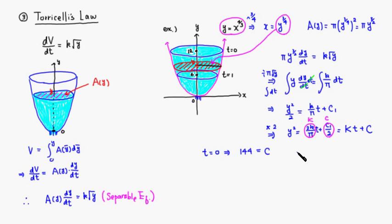Then we try t equals 1. Y becomes 6, so 6 times 6 is 36, which equals k plus c. Since c is 144, subtracting 144 from both sides, k is going to be 36 minus 144, so it's negative 108.